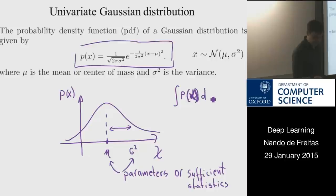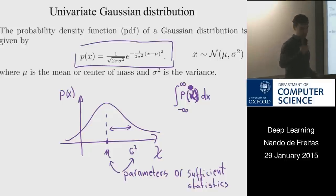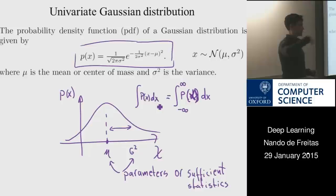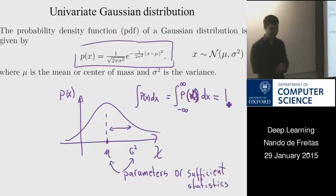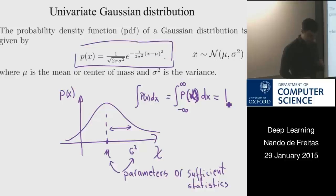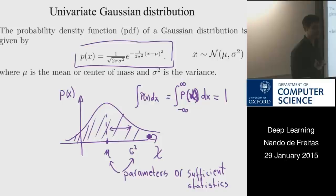One key property: the integral of P(x) dx from minus infinity to infinity equals one. Throughout this course I'll write this simply as the integral of P(x) dx, and if I don't specify limits, you should assume it's over the entire space. The area under the density curve corresponds to what we know as probability.